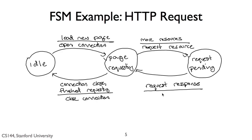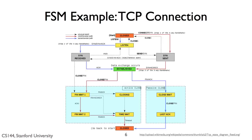So let's walk through a real example of an FSM — probably the most famous FSM on the Internet. This diagram here describes the finite state machine of TCP. I know it looks very complicated. It has 12 states, but I'll walk through it bit by bit, and you'll see how it all fits together. The diagram really has four parts, which we can look at separately.